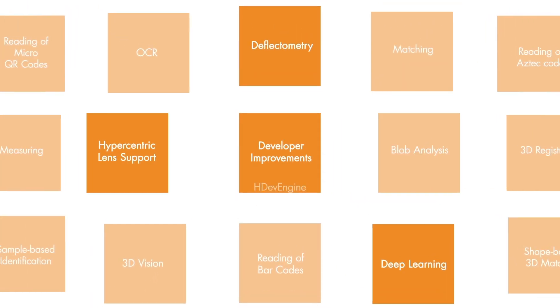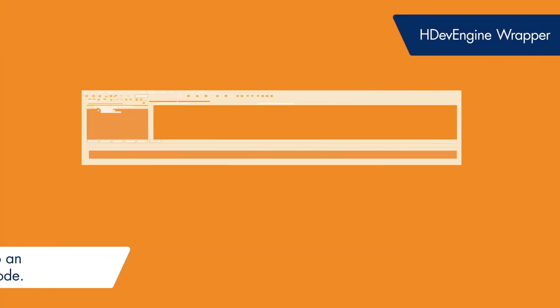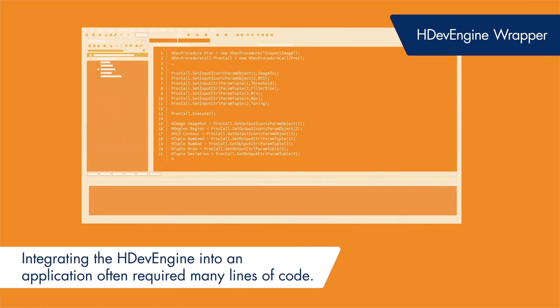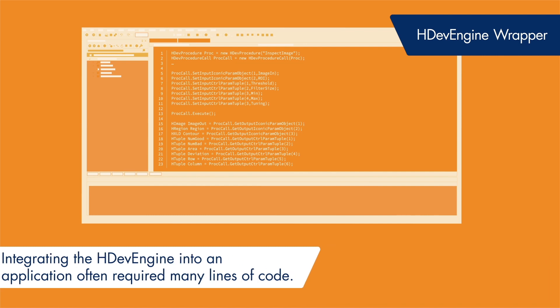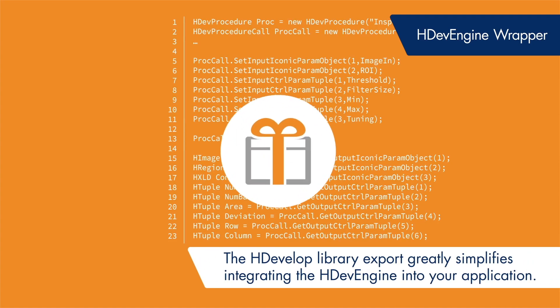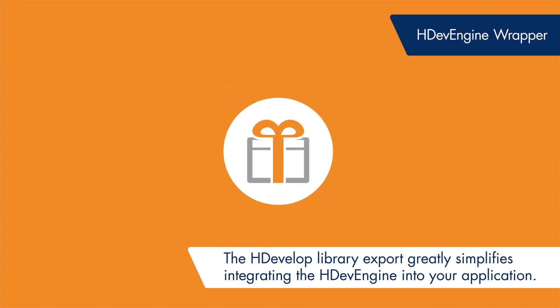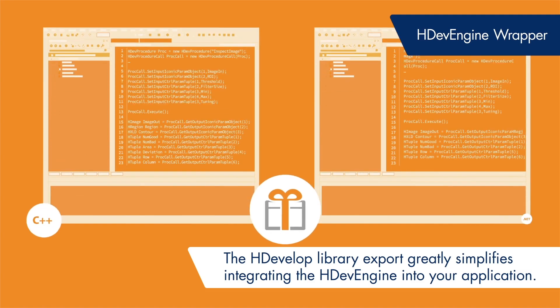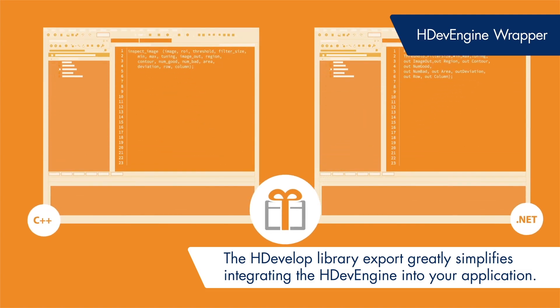Integrating the HDEV engine into an application — for example, writing the interface for the user's HDevelop script — needed many lines of code depending on the number of input and output parameters. The HDevelop library export greatly simplifies these integration efforts by providing a wrapper with all the needed HDEV engine API code.